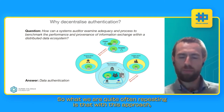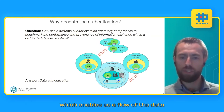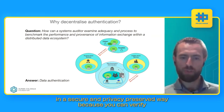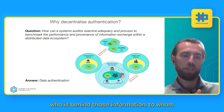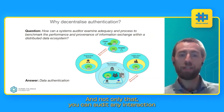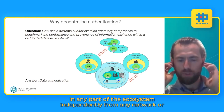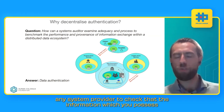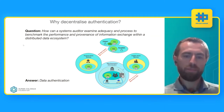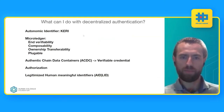What we are quite often repeating is that with this approach, we are securing the data, not the location. This enables a flow of data across multiple parties, multiple jurisdictions, and multiple entities in a secure and privacy-preserving way. You can verify who is behind the information, who the data belongs to, who controls it — and you can audit any interaction in any part of the ecosystem, independently from any network or system provider, to check that the information you possess about an individual user was obtained legally.